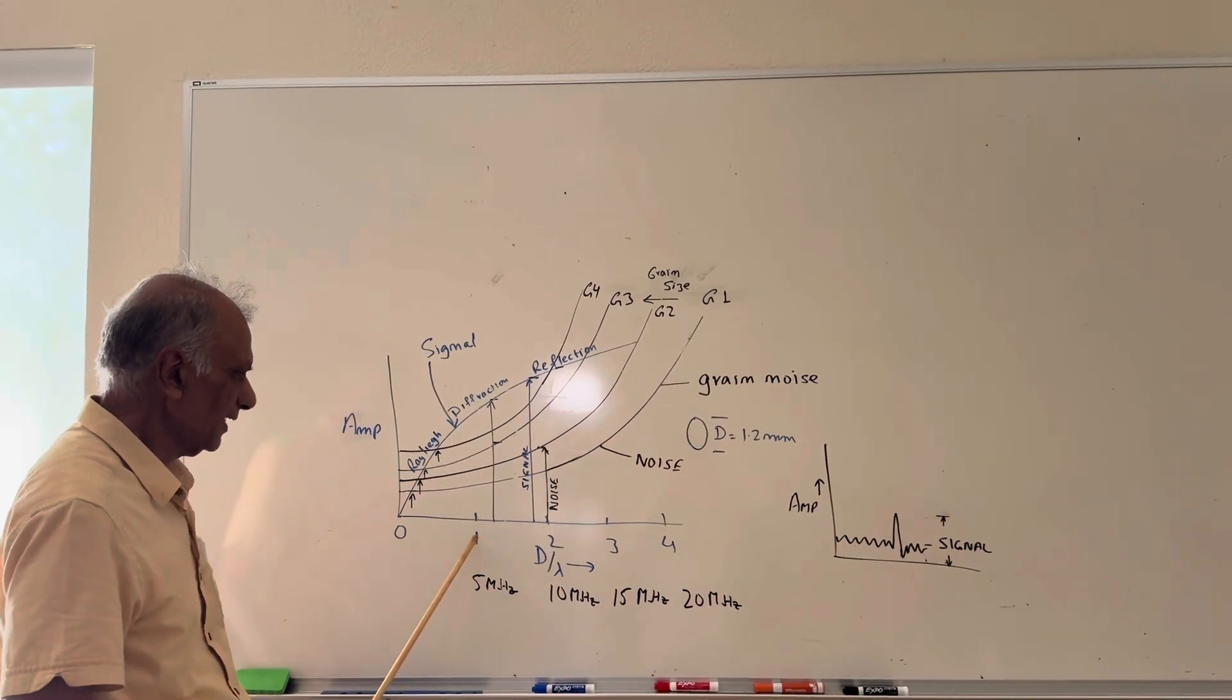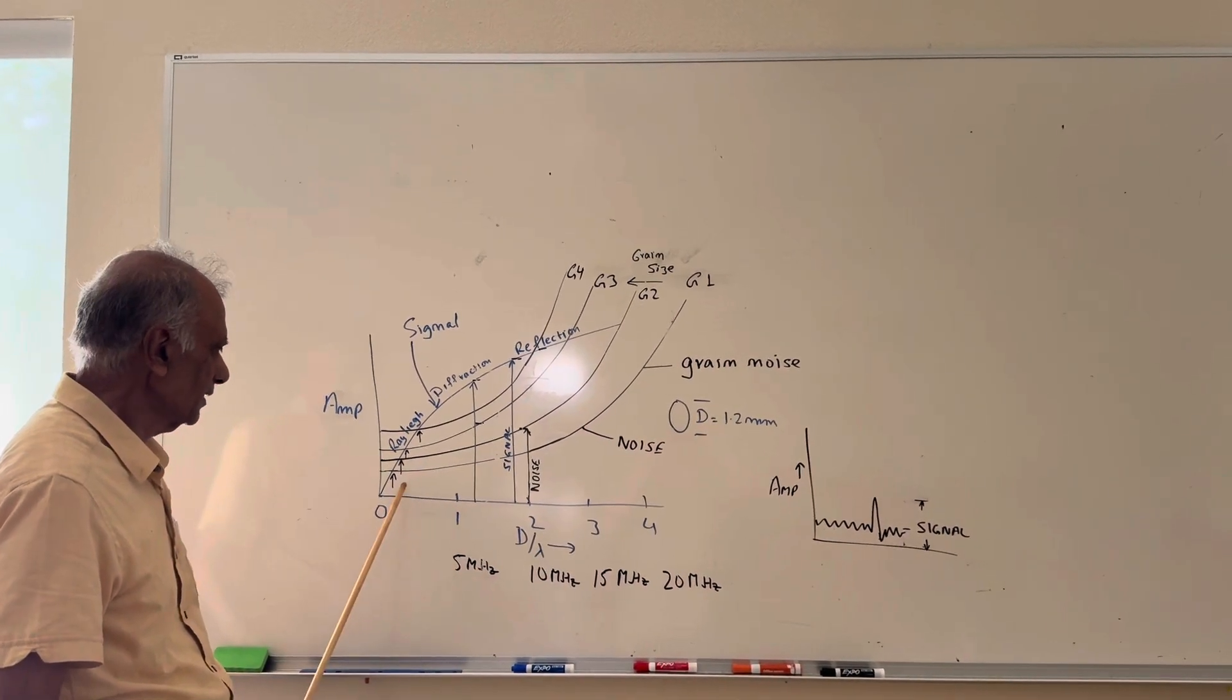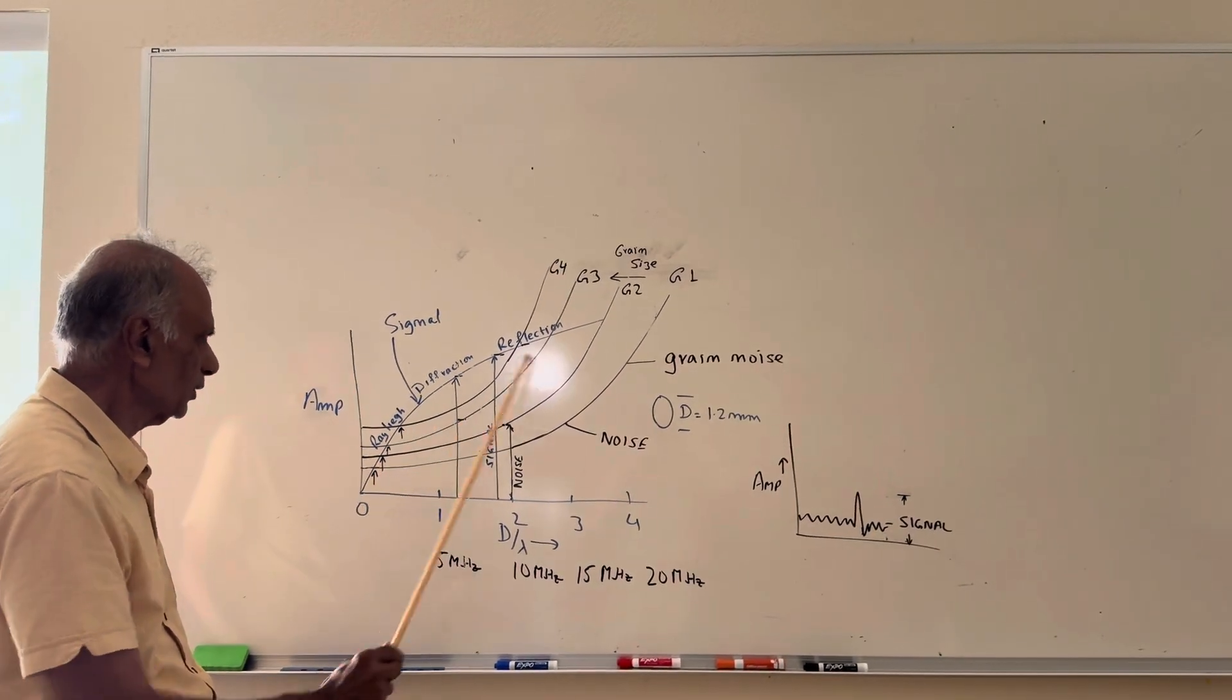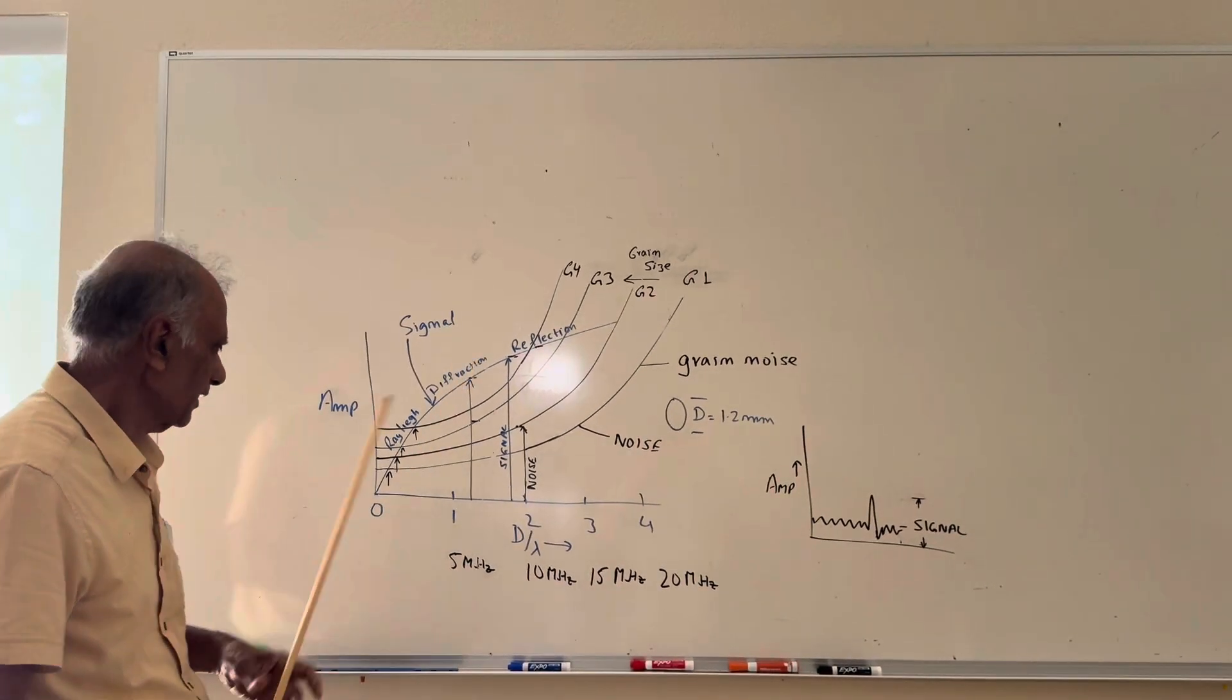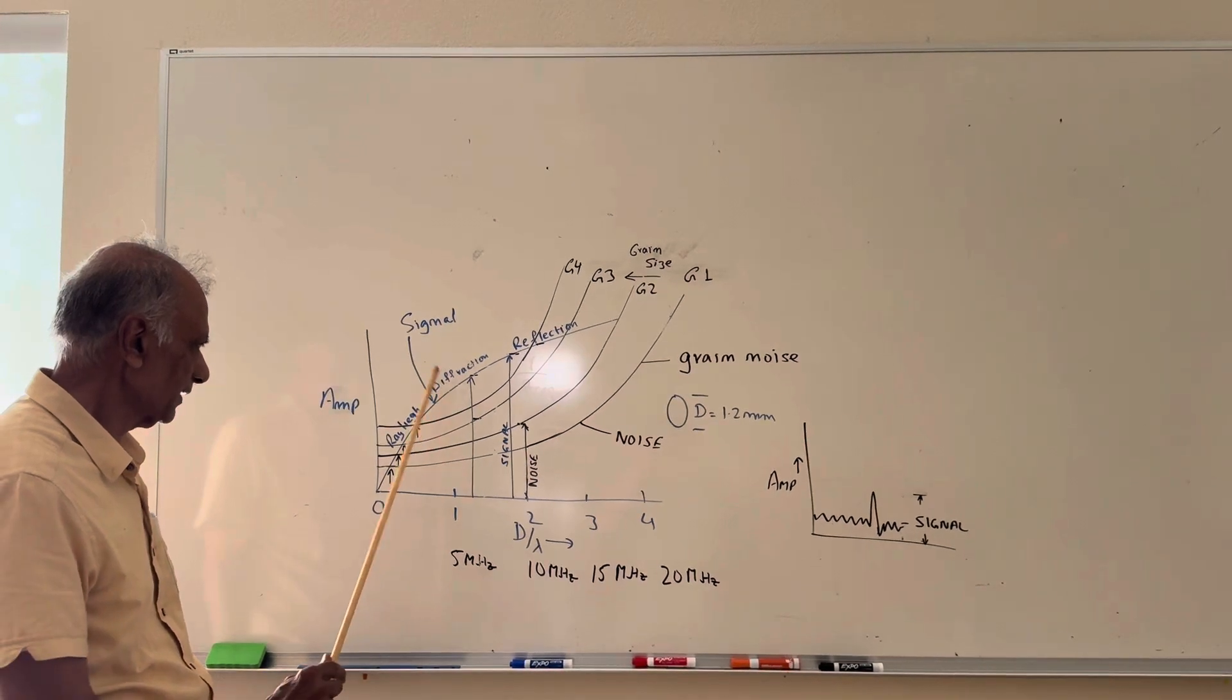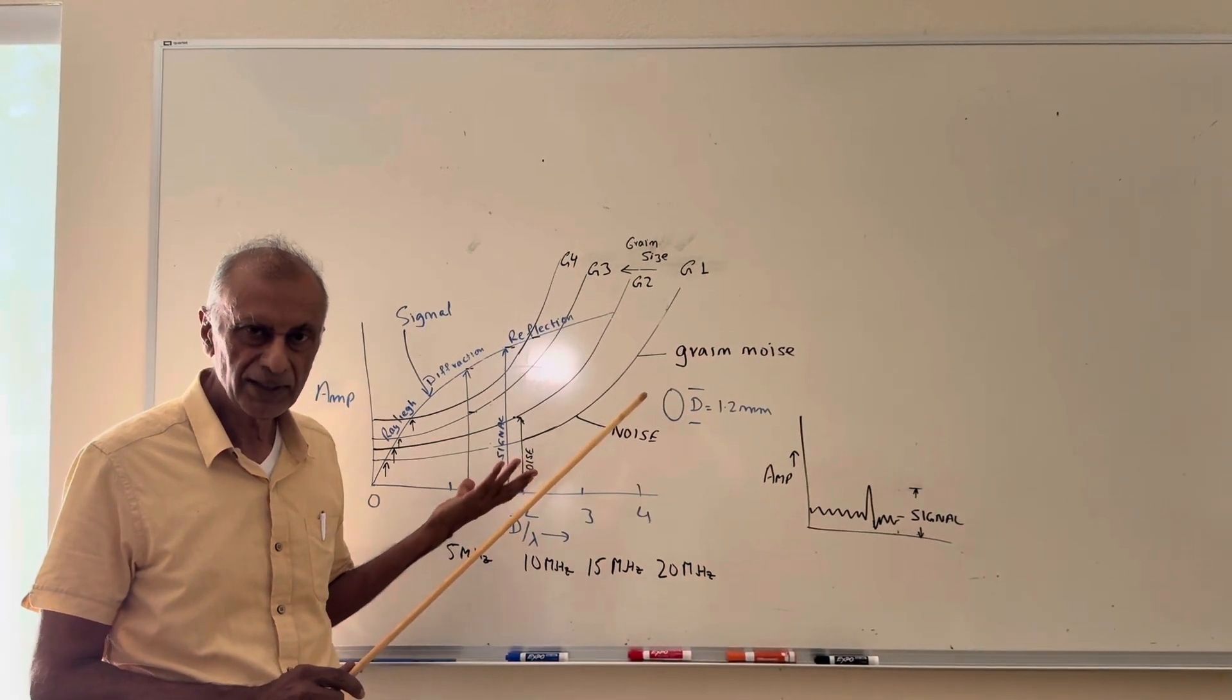The reflection actually does increase, like shown by this blue curve, but it increases because of different factors. When the flaw size is zero, it's zero. Then when it's one, it's something like this. Then when D over lambda is quite large, all we are getting is the pure reflection from the reflector.